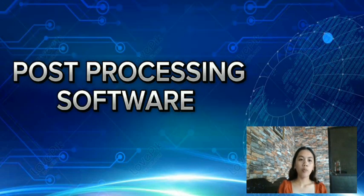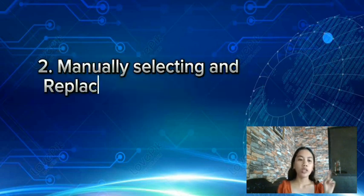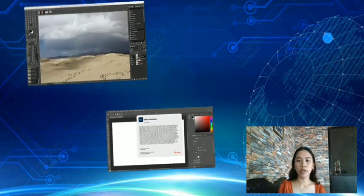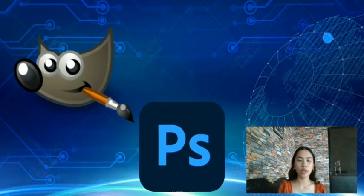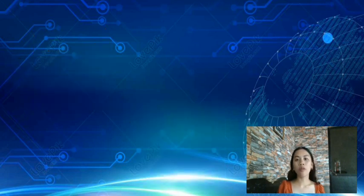There are two things done in post-processing. First, an algorithm is run on all existing pixel data and minor changes are applied to that data. Second, manual selecting and replacing of pixel data with totally new data. JPEG file editing is generally done in image editors that have various features such as green and red eye removal — for example, GIMP, Adobe Photoshop, or Photoshop Elements.